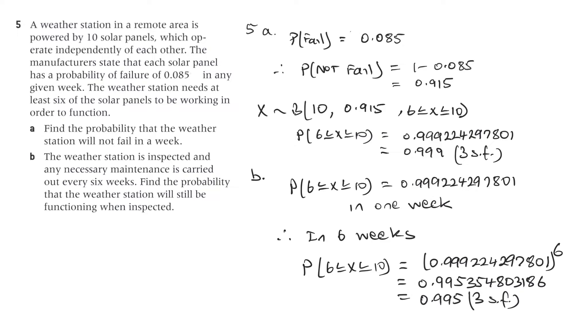then the probability of not failing in six weeks is that number, that probability times itself six times or to the power of six. And that's 0.995354803186, which is 0.995 to three significant figures.